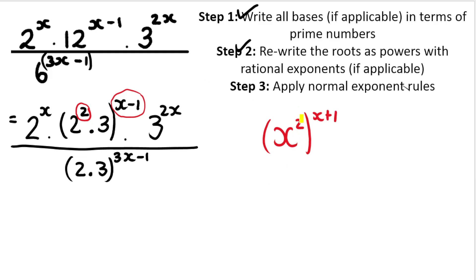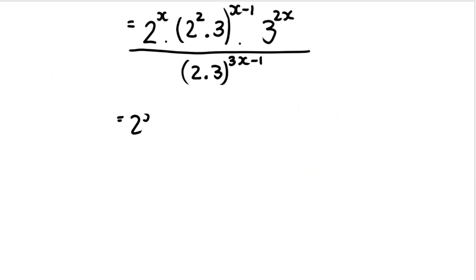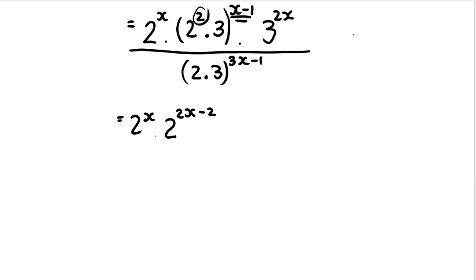Just remember, if you have x to the power of two raised to this exponent, the two needs to be multiplied by the x, and the two needs to be multiplied by the one — this is where people go wrong. So this will be x to the power of two times x, which is 2x, and two times one is plus two. Let's apply it to our sum. We've got two to the power of x, and then two multiplied by x gives two to the power of 2x, and two multiplied by negative one is negative two. We've done the power inside multiplied by power outside rule — essentially we're multiplying the two by the x minus one and distributing the two in.